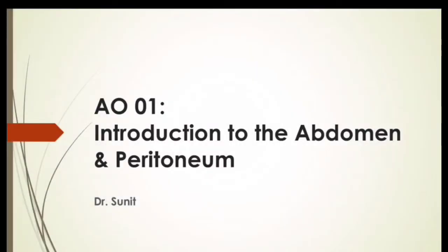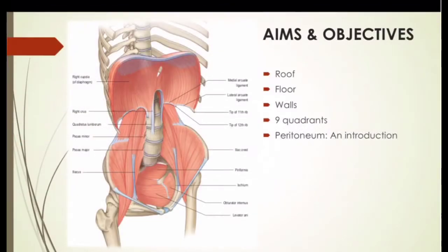Hello folks, welcome to the new series on the abdomen. Today we're going to have a very basic introduction to what exactly is the abdominal cavity and what exactly is the peritoneum. The aims and objectives of this session are: first, we're going to find out about the roof, the floor, and the walls of the abdominal cavity; then we're going to divide the abdomen into nine quadrants using two vertical and two horizontal lines; and finally we're going to speak about what exactly the peritoneum is — we call it the balloon within a balloon concept.